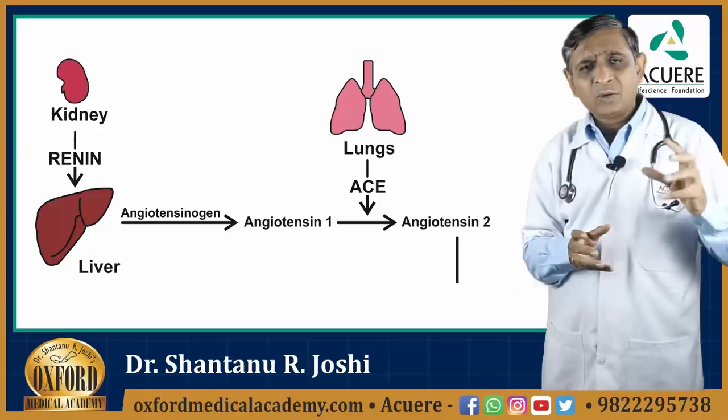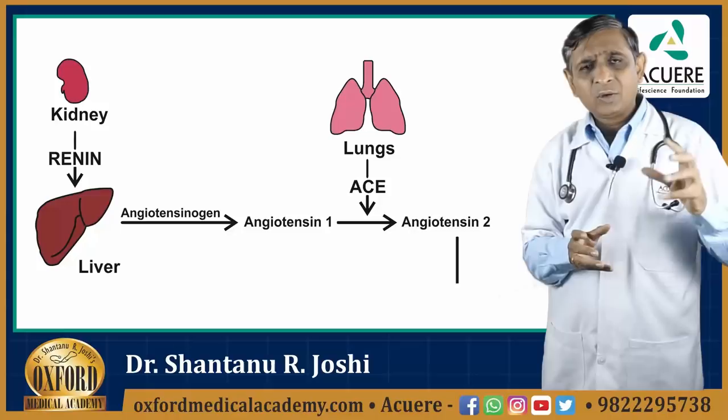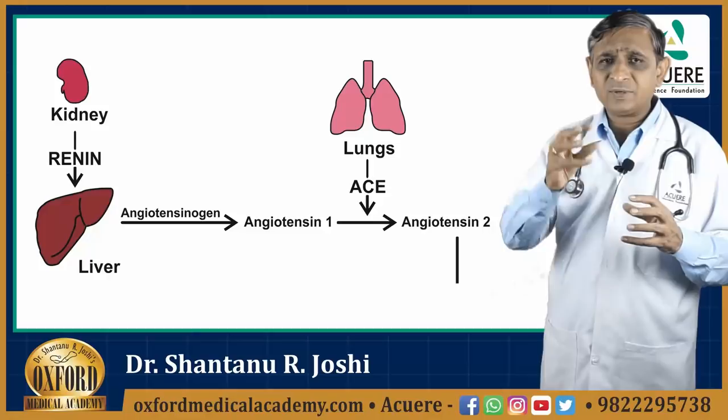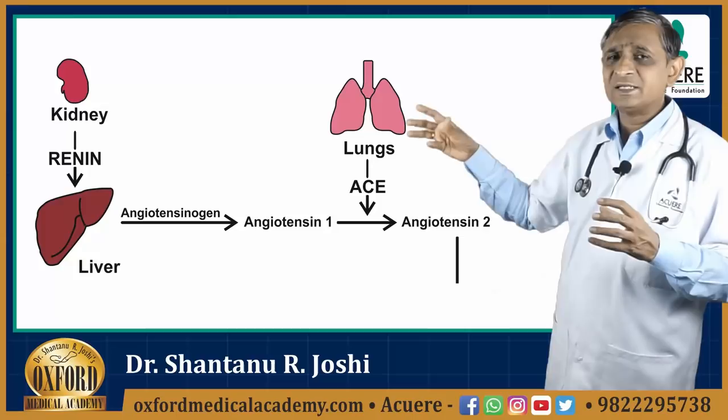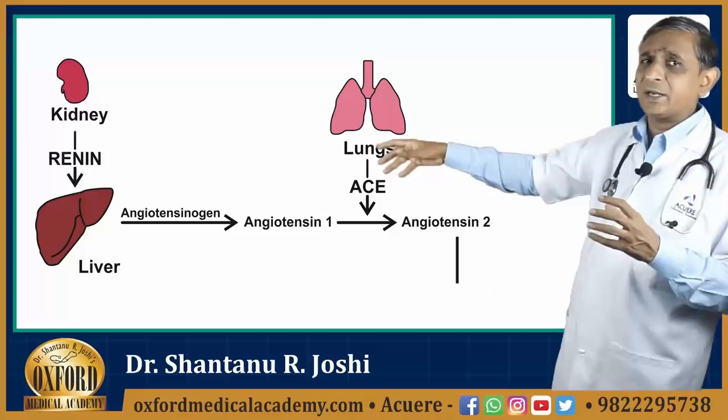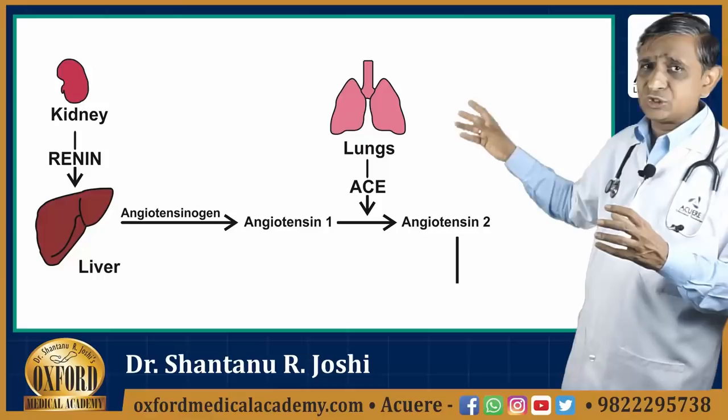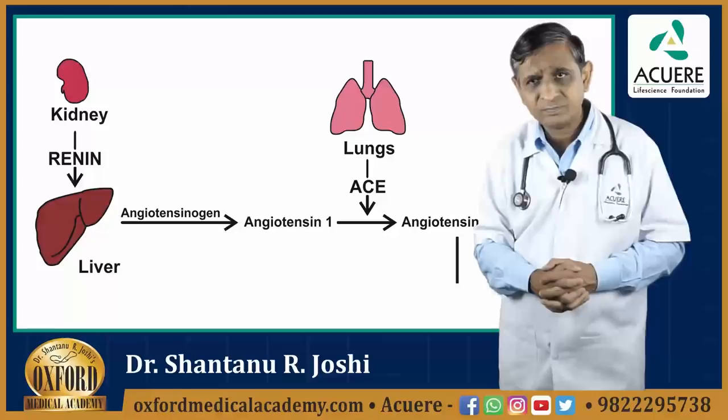So, starting from the beginning: renin comes from the kidney, stimulates the liver, causes conversion of angiotensinogen to angiotensin-1 in the liver. This angiotensin-1 gets converted into angiotensin-2 in the lungs with the help of angiotensin converting enzyme. Now we have angiotensin-2.